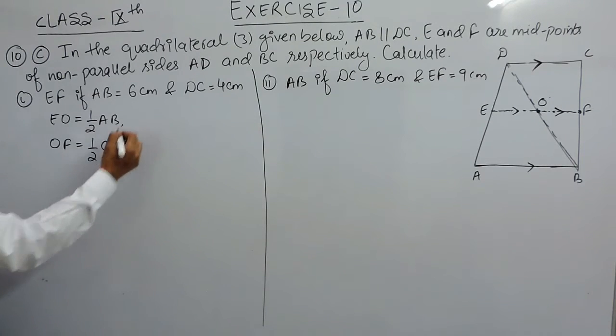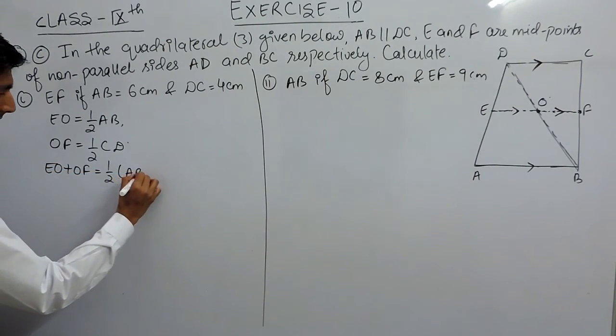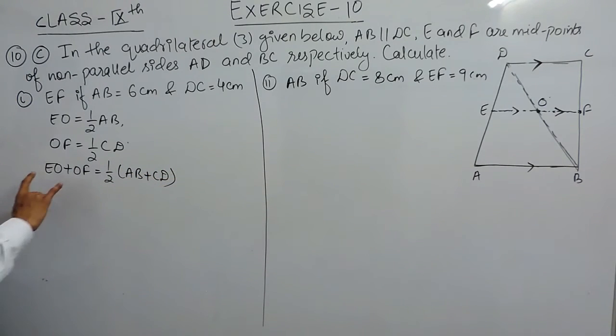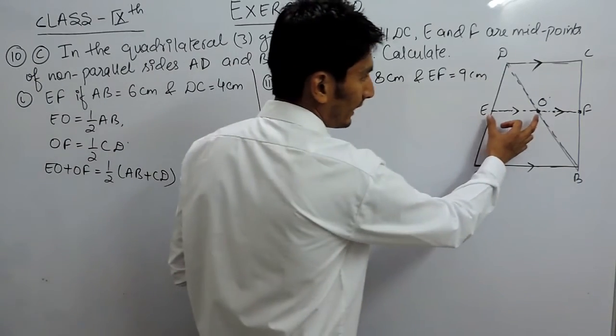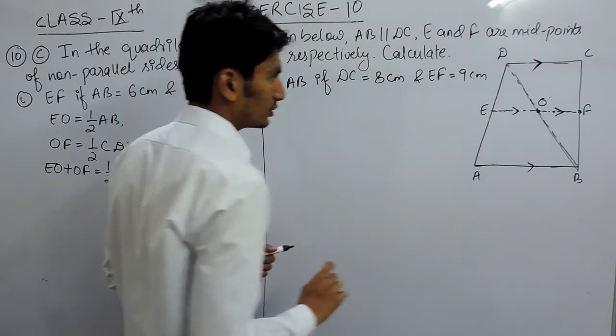If I add these two equations, adding first and second, EO plus OF must equal half of AB plus CD. I have taken half as common, and EO plus OF can be written as EF.